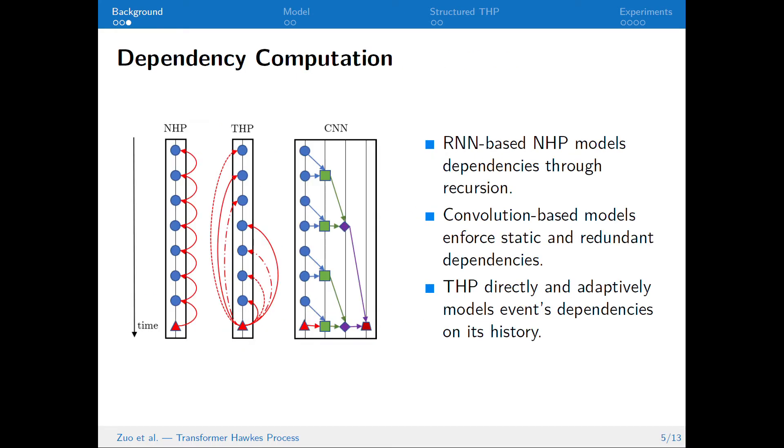As illustrated in this figure, RNN-based models compute dependencies through recursion and are subject to error propagation. Convolution-based models enforce static and redundant dependencies, therefore are inefficient. Our THP can directly and adaptively model event's dependencies on its history.